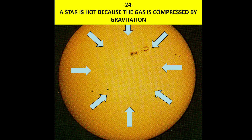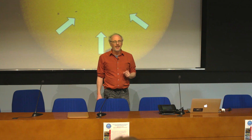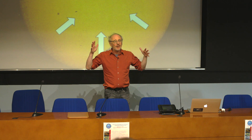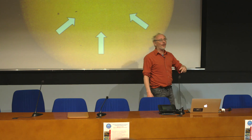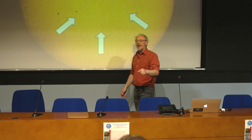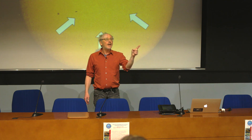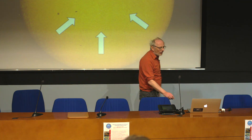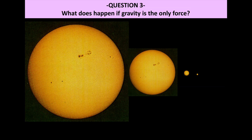We can say that a star is a sphere of gas confined by gravity. Now, if you have only gravity, what will happen? All the gas will collapse to the center. You can compute how much time it takes for the collapsing to occur - it would be very short. This is a timescale called the free-fall timescale, and for the Sun this free-fall timescale is just 30 minutes. If there was only gravity, the Sun would collapse in 30 minutes.